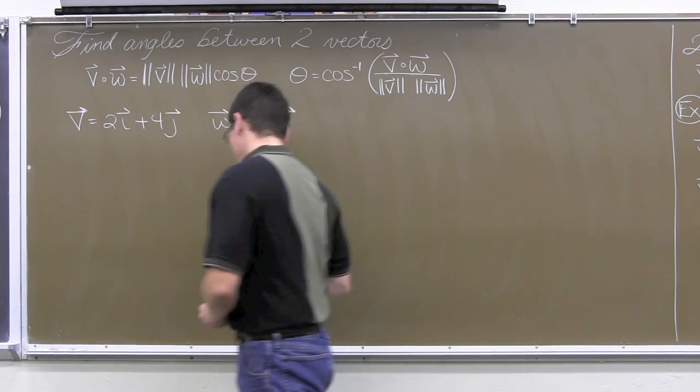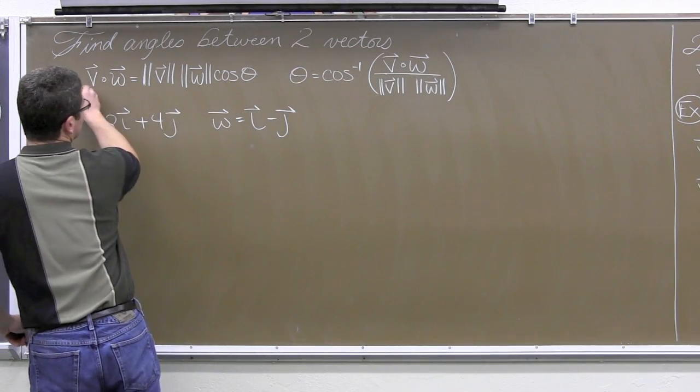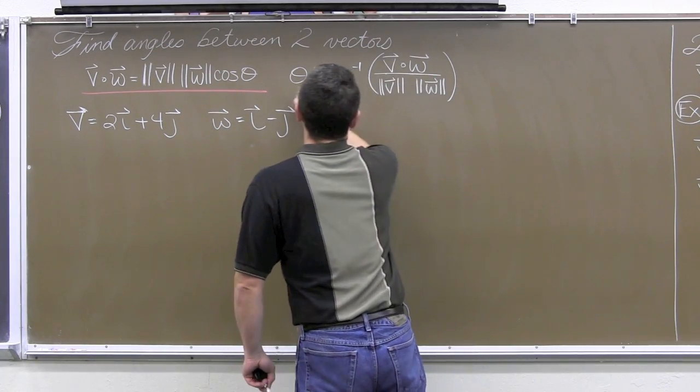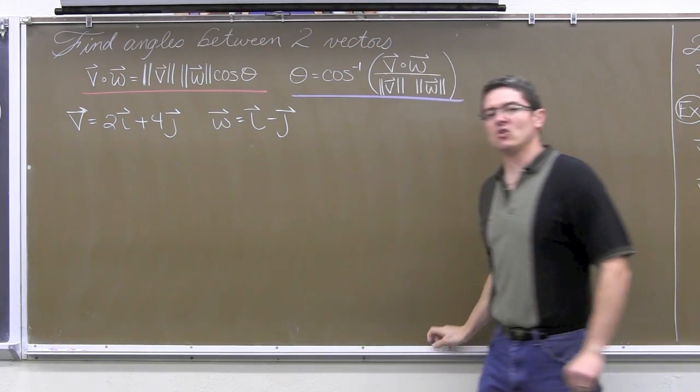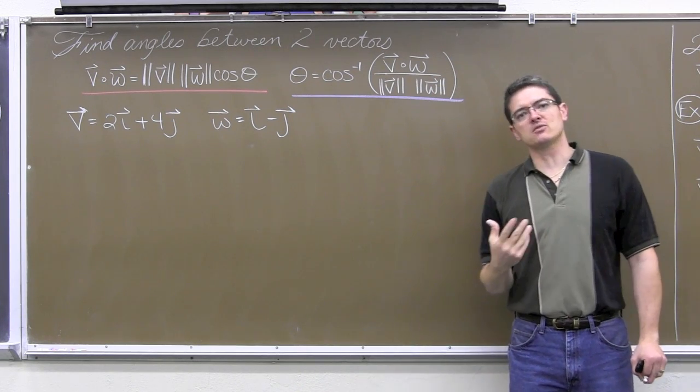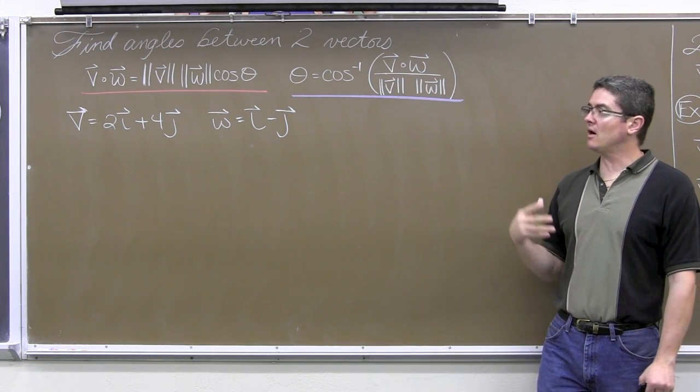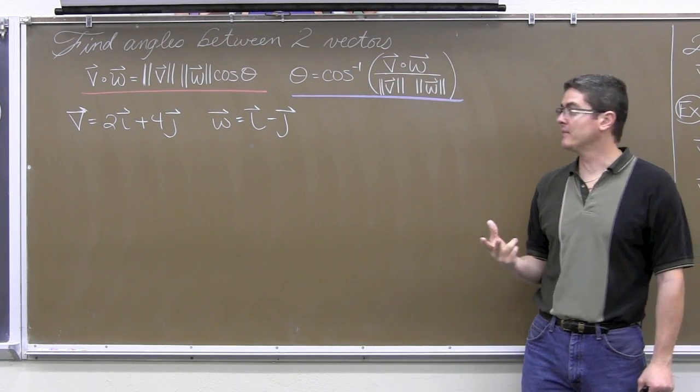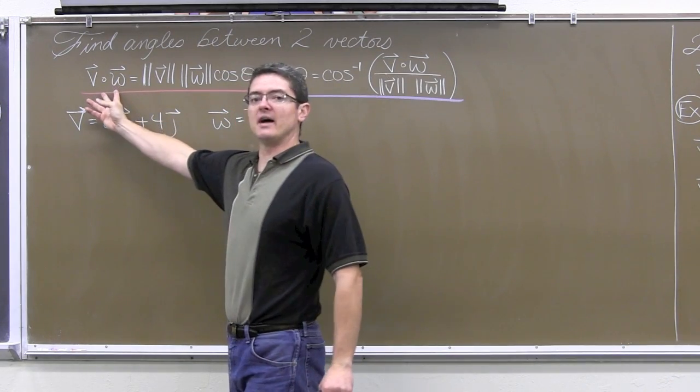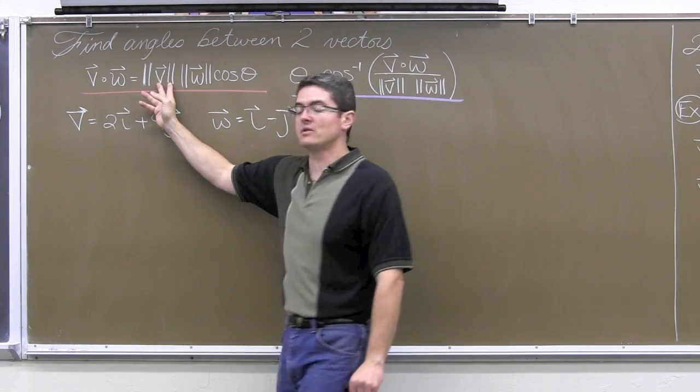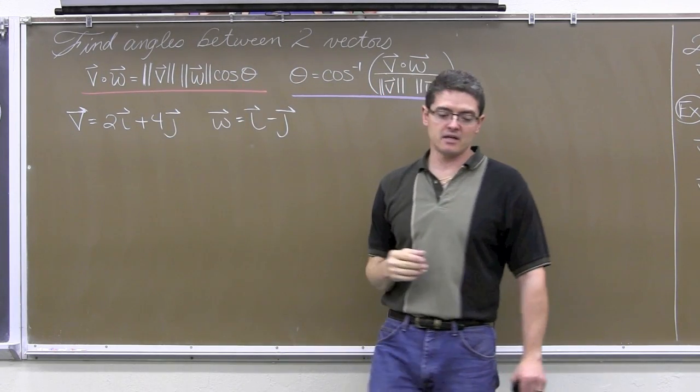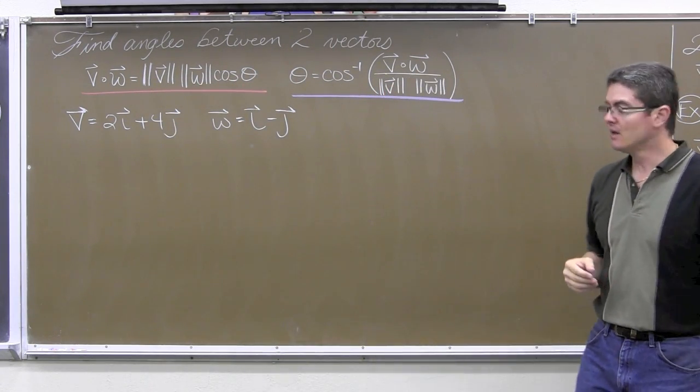Alright, so here we have the formulas for finding, there are two versions of it. We are going to have these formulas for helping us find the angle between two vectors. These formulas, you probably have a derivation in your textbook, they come from or derive from the law of cosine. And it says that the dot product between two vectors is equal to the magnitude of the first vector times the magnitude of the second vector times the cosine of the angle that is in between them.